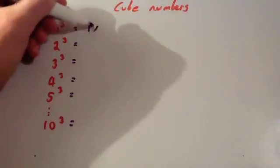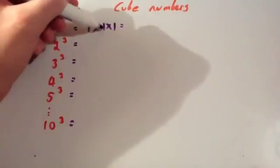So 1 cubed would be 1 times 1 times 1. Well 1 times 1 times 1 is 1.